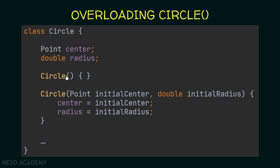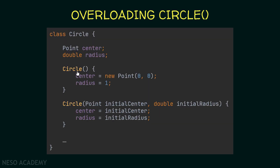Let's modify the default constructor to assign meaningful default values instead of null and zero. Inside this constructor we assign the center to a new Point with x=0 and y=0, and the radius to 1. So if the user doesn't want to specify a center and radius, they can use this constructor and get these default values.